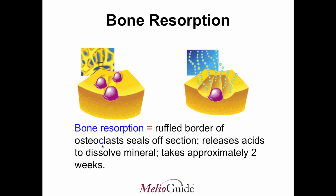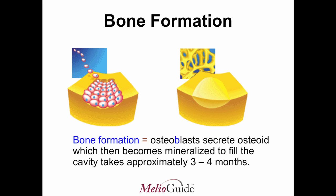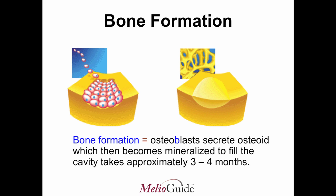What happens then in normal bone is that the osteoblasts — these are cells that come in and form new bone. They actually settle down into the pits that the osteoclasts form. They secrete a substance, an osteoid, which then becomes mineralized to fill the cavity. This can take up to three or four months in time.